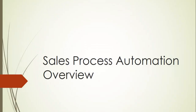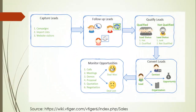Sales process automation overview. The lead management part we have already seen — how we are capturing a lead. It is a review: we are running a campaign and then we can import leads directly, or we can have a direct link from our website where they come as a web form, and then we can insert the leads into the vTiger CRM.